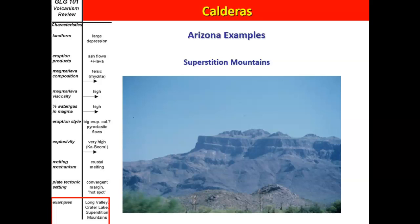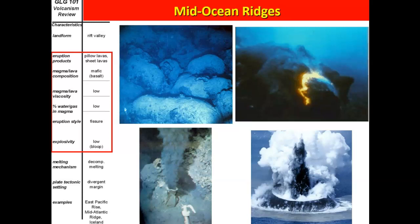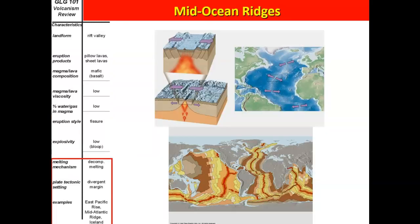We also get smaller felsic eruptions called lava domes, usually associated with stratovolcanoes when there's a composition change in the magma chamber. They tend not to be extremely explosive because gas content is relatively low, but they're super thick so they can't flow very far. The image here shows a lava dome — that tiny little feature that grew in the crater after the big eruption at Mount St. Helens. An example of a caldera-type felsic eruption in Arizona would be the Superstition Mountains. At mid-ocean ridges, volcanism is very mafic because the melt comes straight up from the mantle with no felsic continental crust to change its composition.